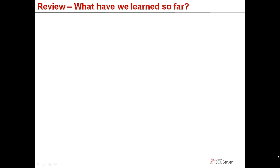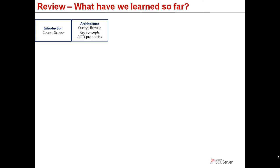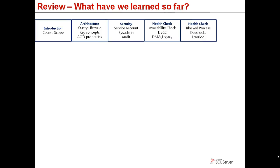We have arrived at the end of the training. Here is a review of what was covered in each module. In the introduction, the course scope and expectations for each chapter were outlined. On architecture, we studied the internal aspects of a query lifecycle, viewed key internal components, ACID properties, and more. In security, we learned the importance of the service account, the aspects around the sysadmin privilege and its risks, and created and changed permissions for a user and changed audit level settings. In the health check module, we studied availability checks, the difference between using the graphical interface and Transact-SQL, DBCC commands, and dynamic management views. We also viewed through a demo a blocked process and a deadlock happening inside SQL Server.